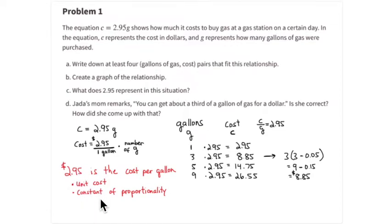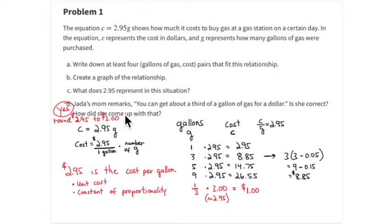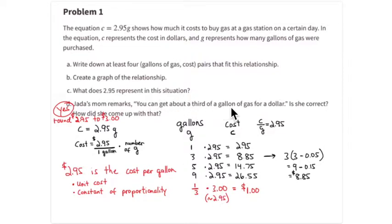Jada's mom says you can get about a third of a gallon of gasoline for one dollar. If you look at one third of a gallon and multiply by approximately three dollars — since two ninety-five is very close to three dollars — you're estimating. One third of a gallon times three dollars costs one dollar, so she is correct: you can get about a third of a gallon of gasoline for one dollar.